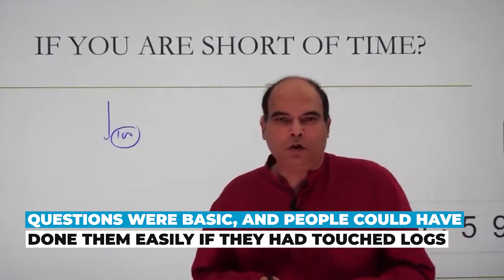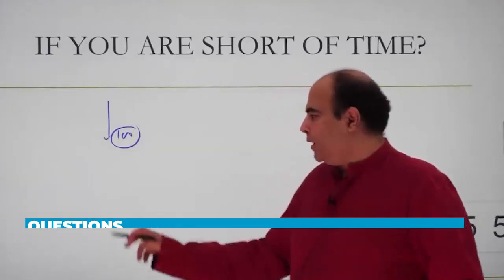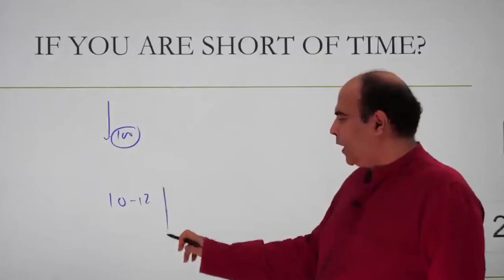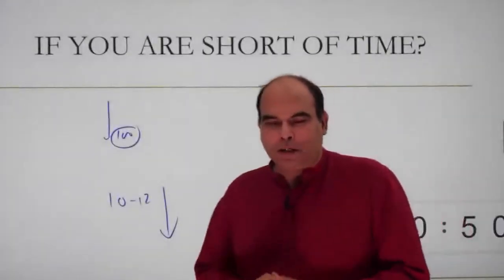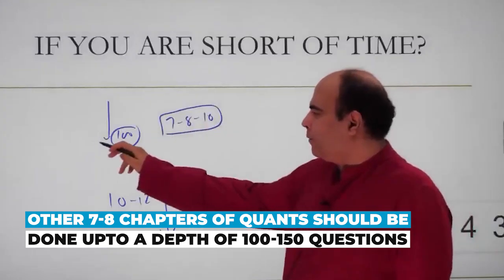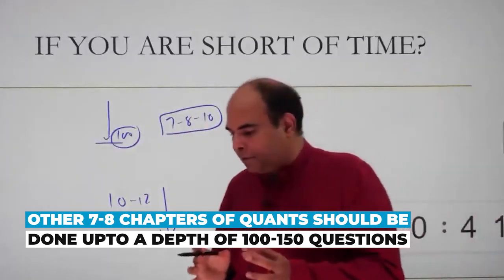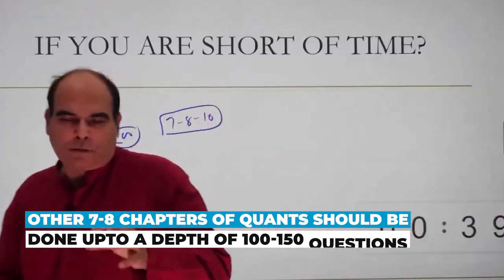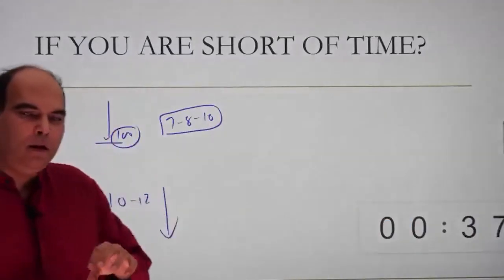So if you are doing 10 to 12 chapters on deep dive, and the CAT syllabus is around 19-20 chapters, other 7-8-10 chapters should be done to the level where you are at a depth of maybe 100-150 questions. The first 100-150 questions, at a logic level, any question should be solvable. That's what your target should be.